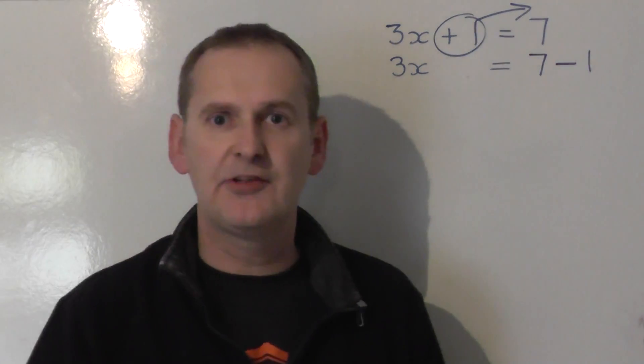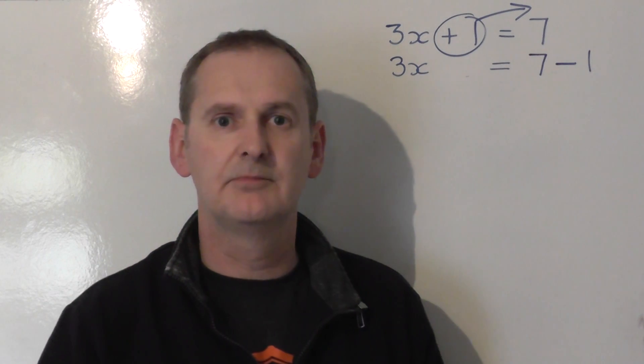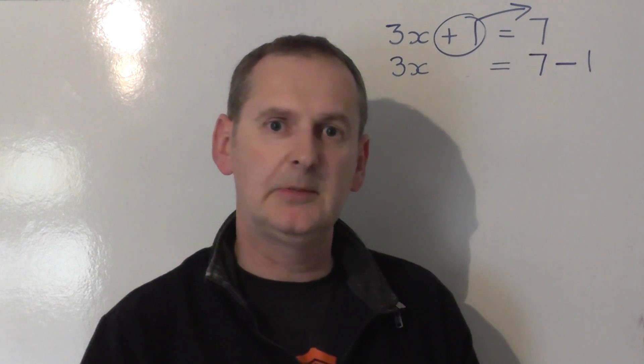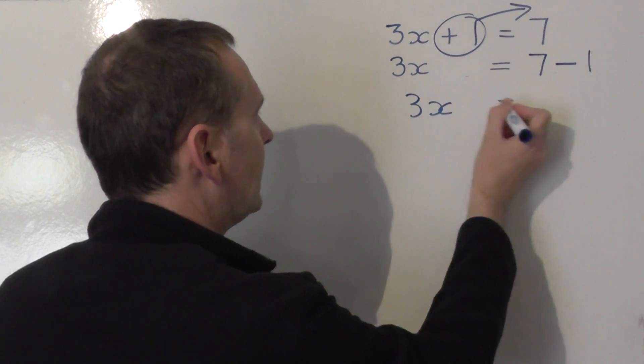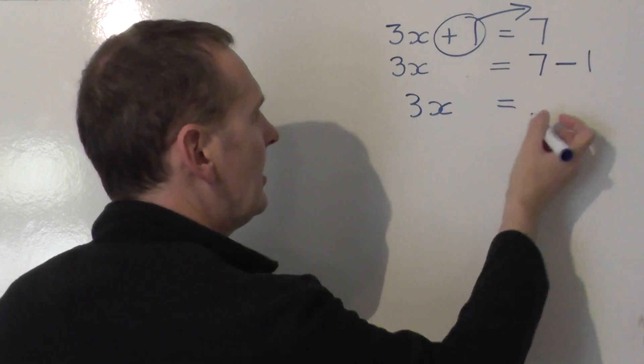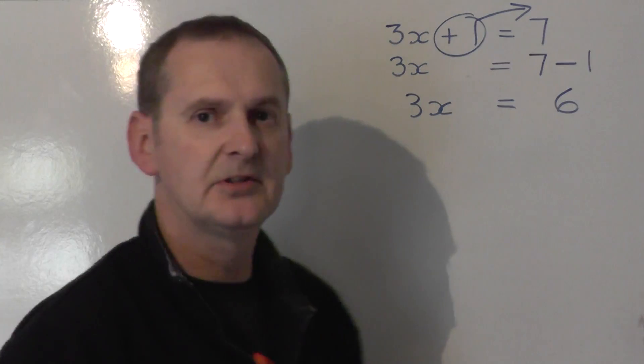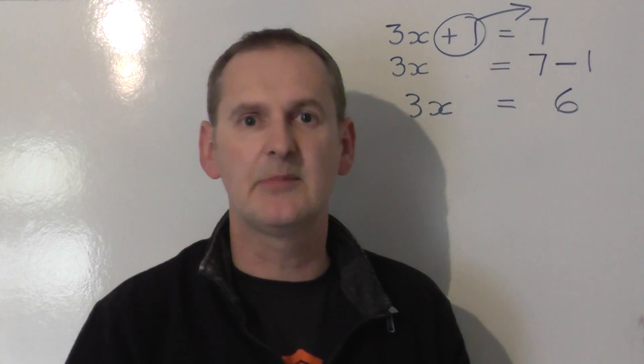So we get on our next line, 3x equals 7 minus 1. OK, let's tidy up a little bit on the right hand side. So I'm going to leave the 3x alone on the left and that's equal to, and 7 take away 1 is the same as 6. So we get a line that 3x is the same as 6.